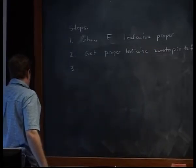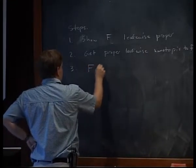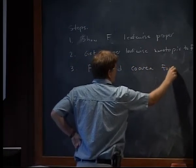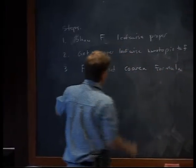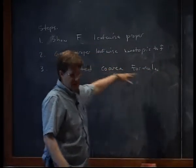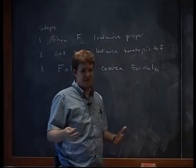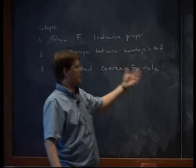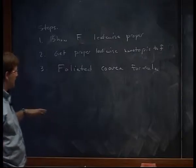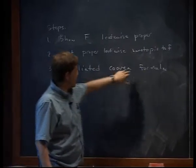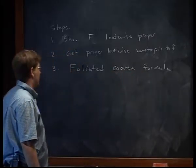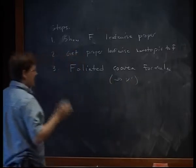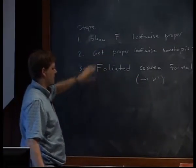We also need a foliated coarea formula — this was a challenge. Failed attempts came from successively nastier maps F, where we thought you couldn't have certain things happen, and then realized you could. That's what led us down the path of how to actually construct nu-prime. Nu-prime is exactly what makes this work, to have a foliated coarea formula in the sense of Federer.